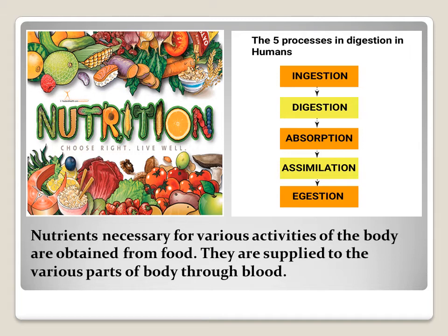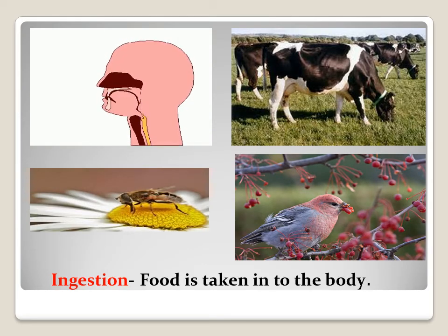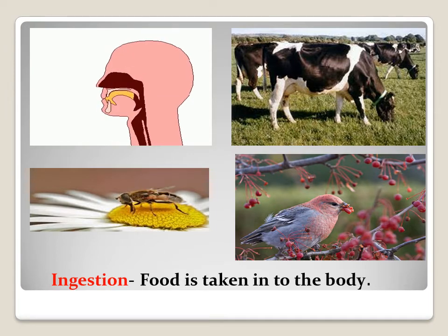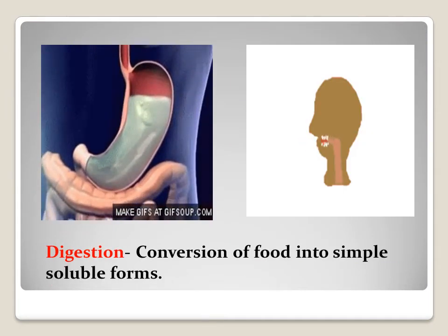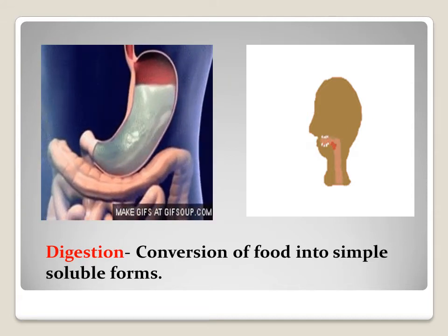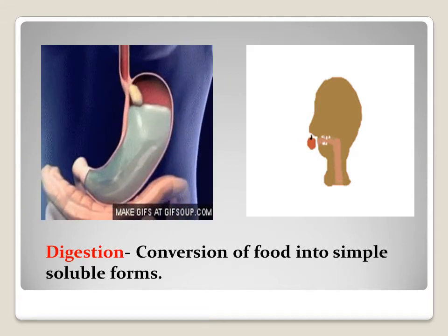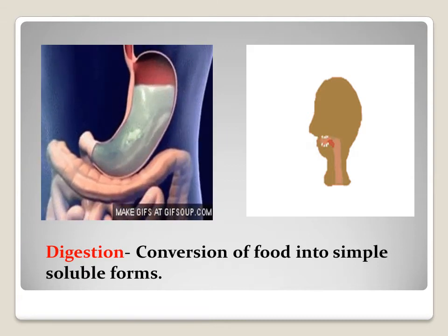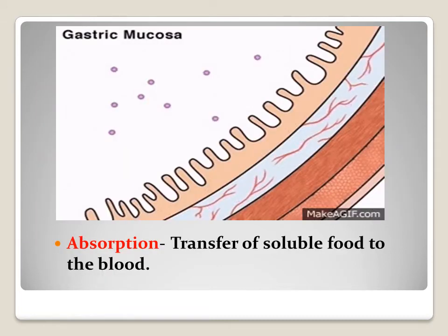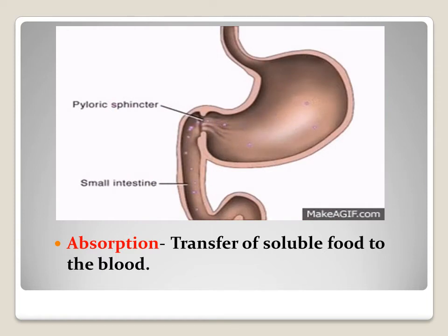The food that we consume does not mix with blood as it is — it needs to be converted into a soluble form that can easily mix in blood. Nutrition in animals involves various steps from ingestion to egestion. The first step is ingestion: food is taken into the body. The second step is digestion: conversion of food into simple soluble forms. The third step is absorption: transfer of soluble food to the blood.